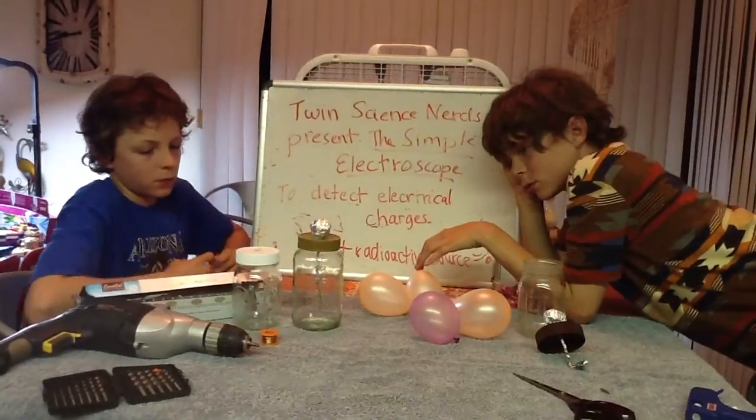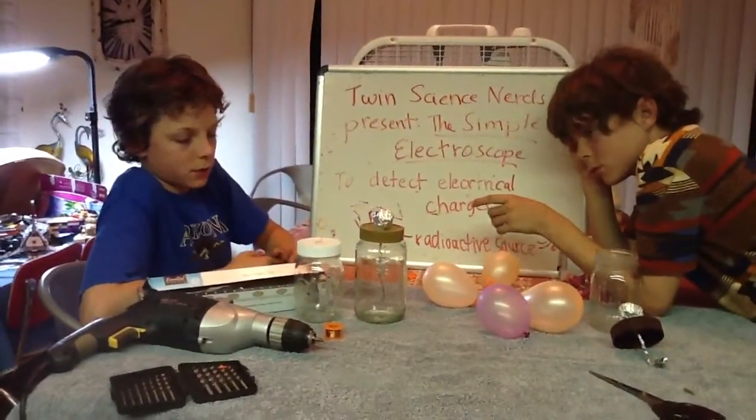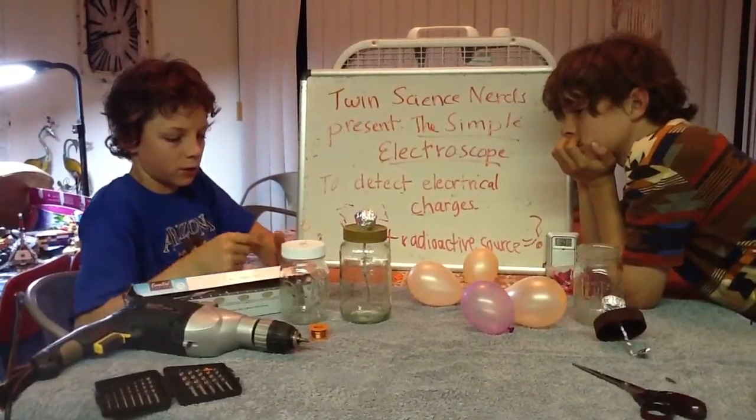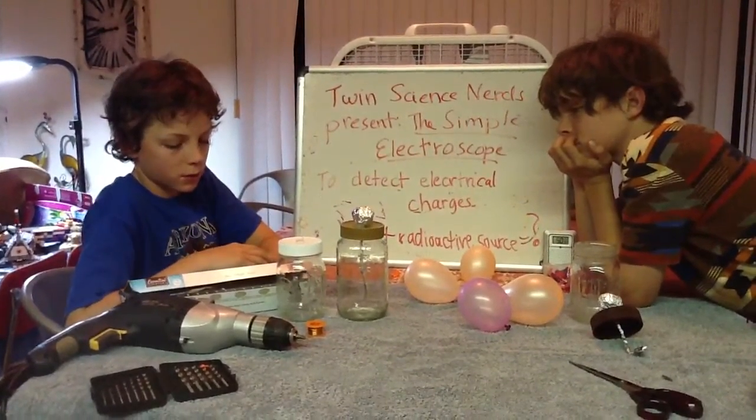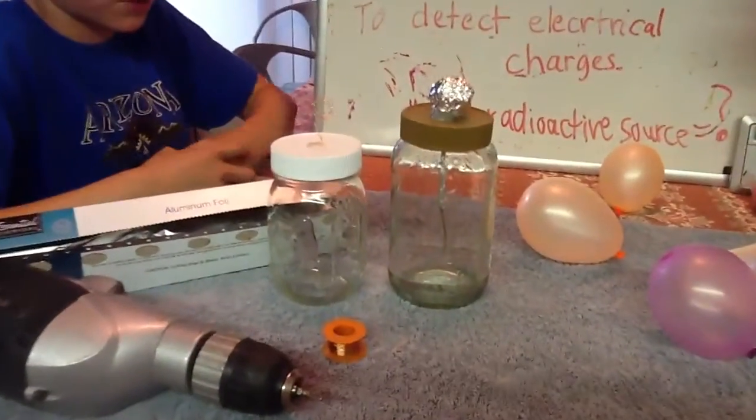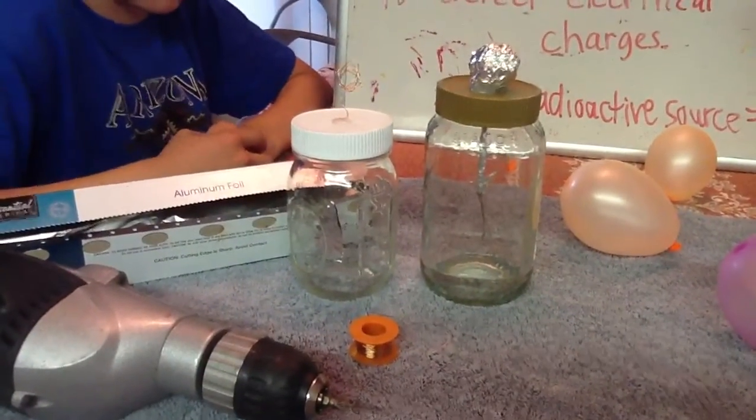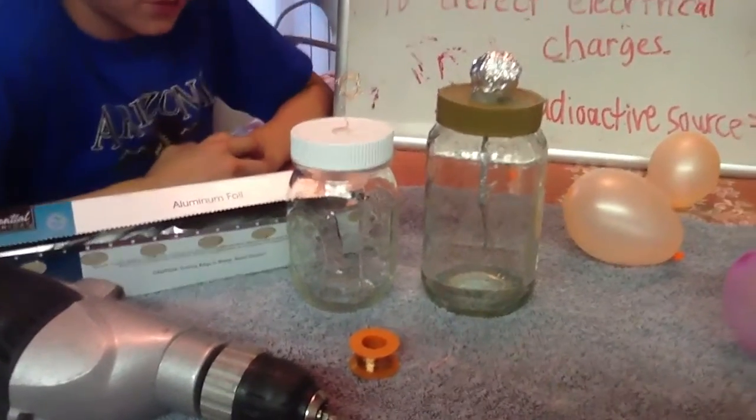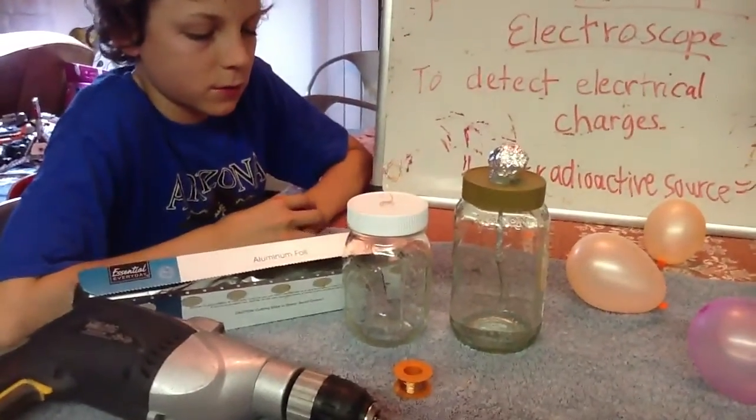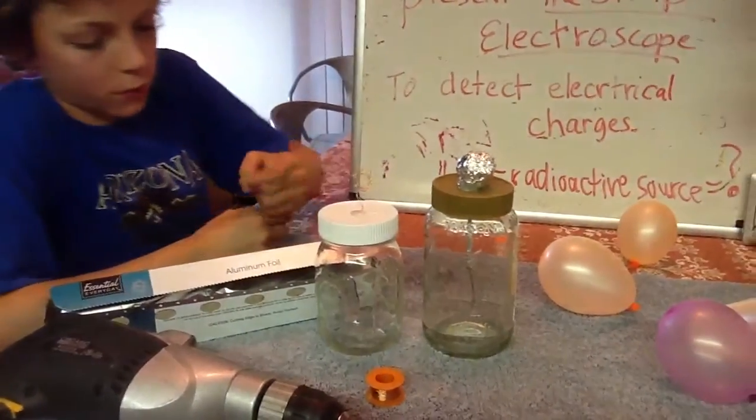What you need is a glass jar, a non-conductive lid, some conductive material such as aluminum foil or copper wire, and then some aluminum foil for the leaves.